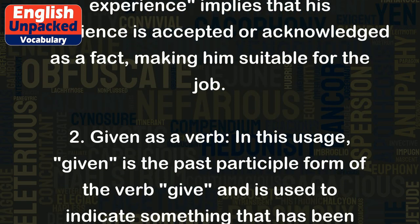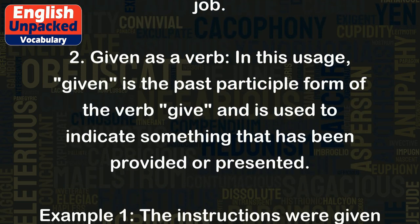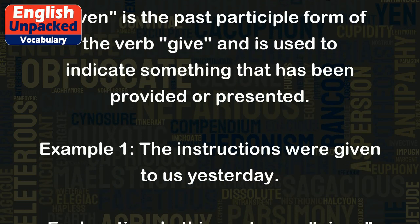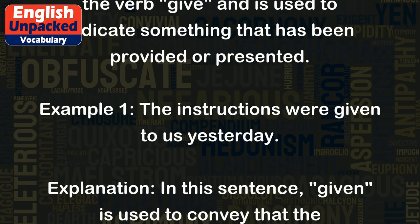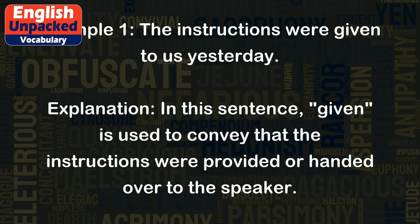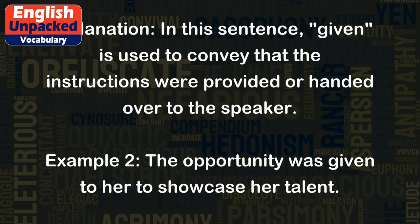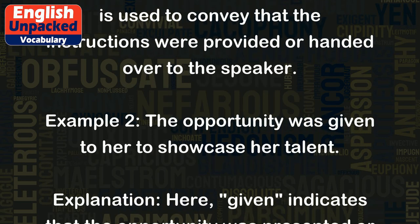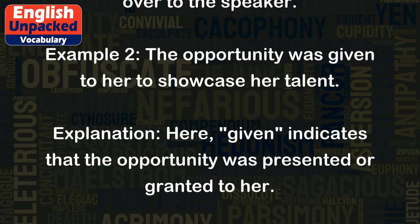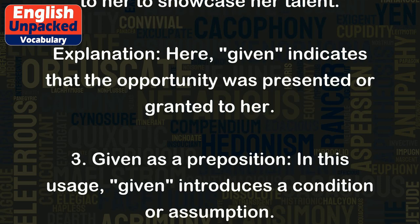Given as a verb. In this usage, 'given' is the past participle form of the verb 'give,' and is used to indicate something that has been provided or presented. Example 1: The instructions were given to us yesterday — conveying that the instructions were provided or handed over. Example 2: The opportunity was given to her to showcase her talent, indicating that the opportunity was presented or granted to her.